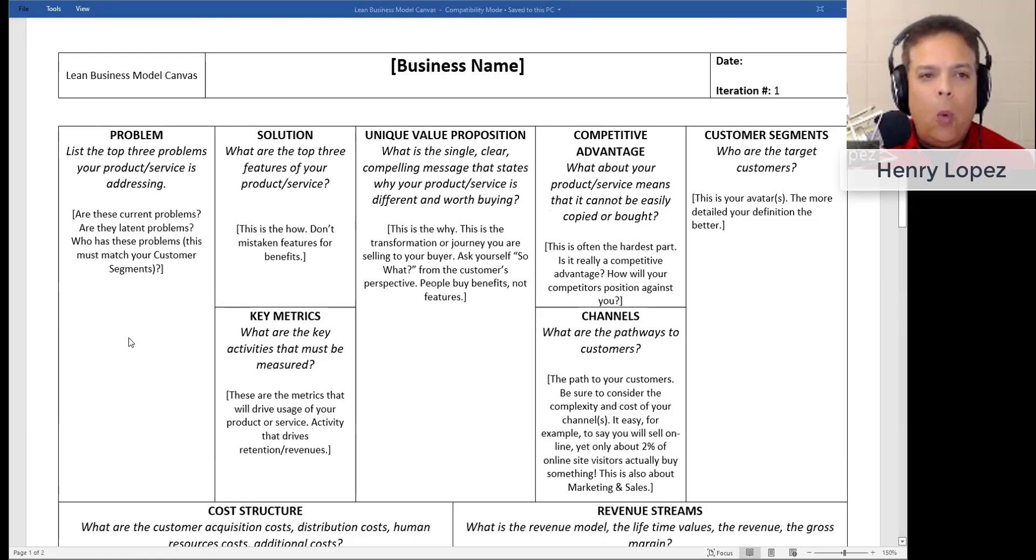The problem is first. What are the top three problems or areas of pain or need that your product or service is addressing? Typically, when we offer something into the marketplace, we're addressing someone's problem or need. Although you can argue some products are about aspirational wishes or status symbols, like a Louis Vuitton purse.